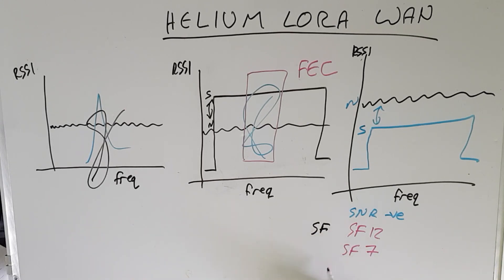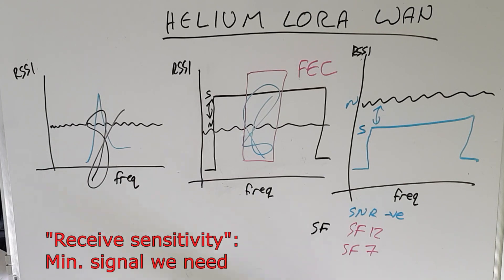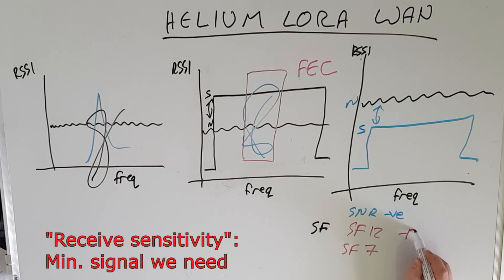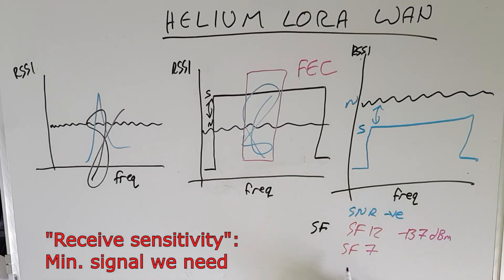Now the different spreading factors affect the area of coverage due to the way the receiver works. It changes the receiver's receive sensitivity. For example, for spreading factor 12 we have a receive sensitivity of about minus 137 dBm, and for spreading factor 7 I think it's about minus 123 dBm.